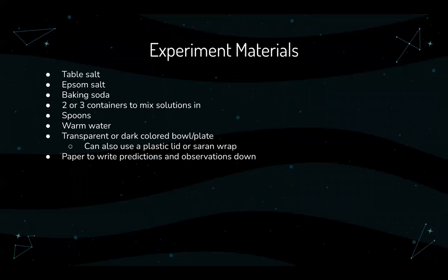On to experiment materials — feel free to pause the video if you need to go and grab them. You need table salt, Epsom salt, baking soda (optional), two or three containers to mix solutions in, spoons, warm water, and a transparent or dark-colored bowl or plate. You could also use a plastic lid or saran wrap if you don't have those, and finally a paper to write predictions and observations down.